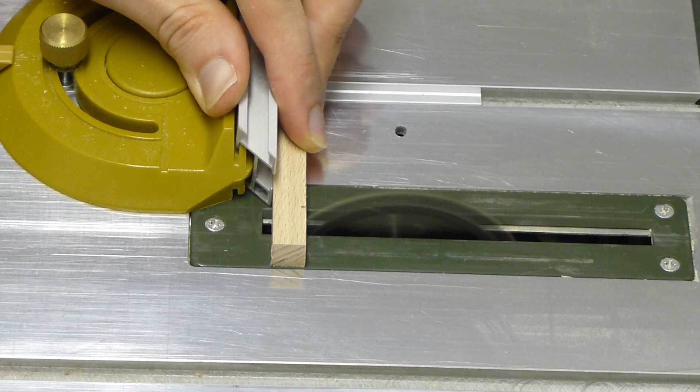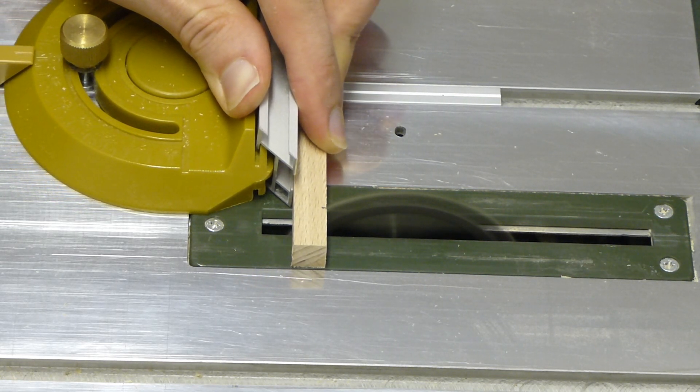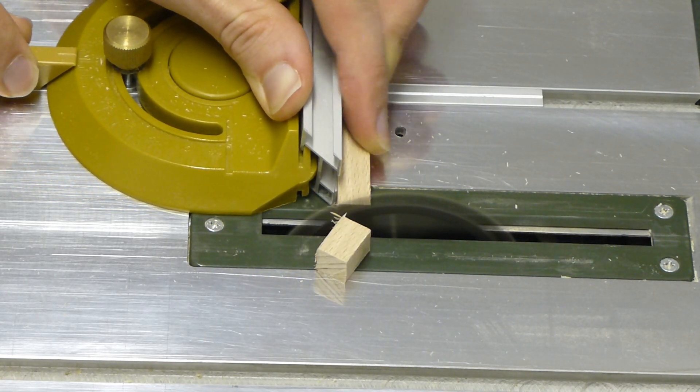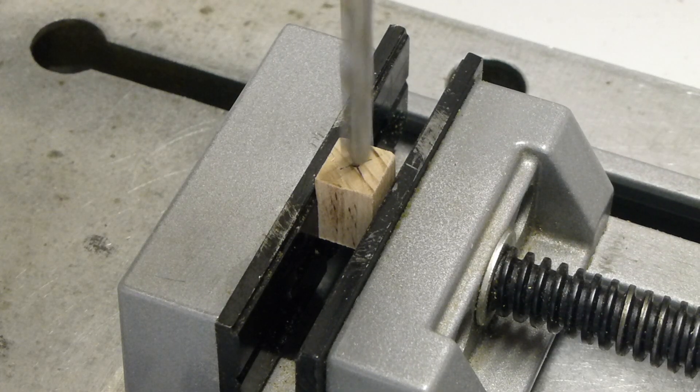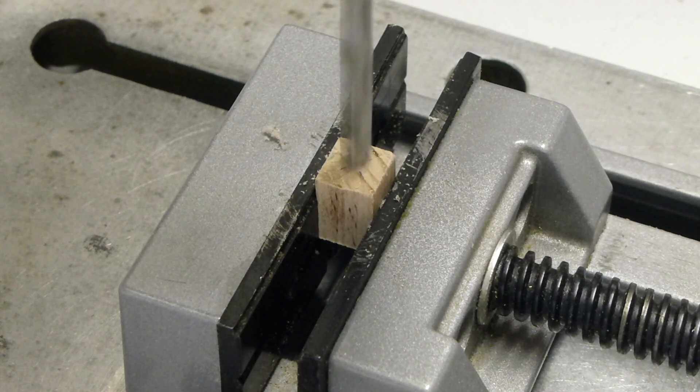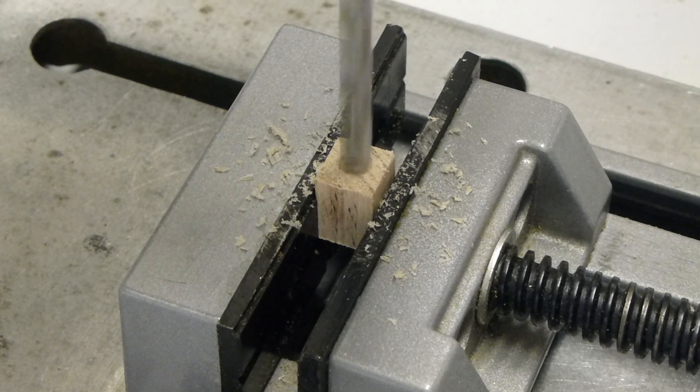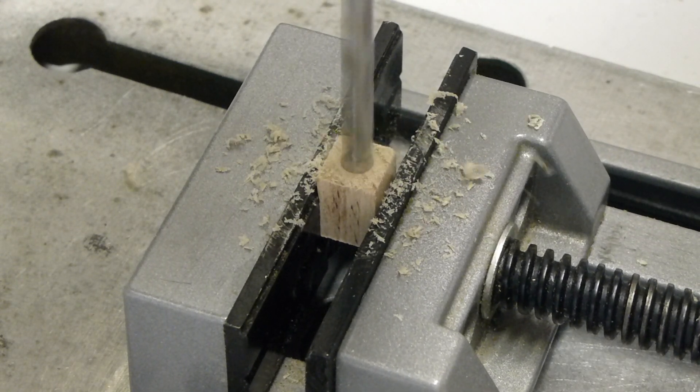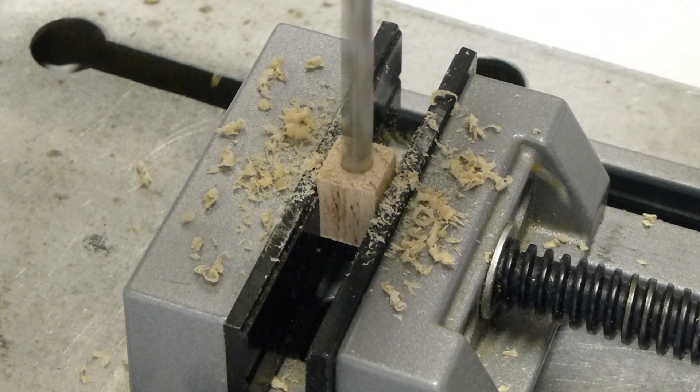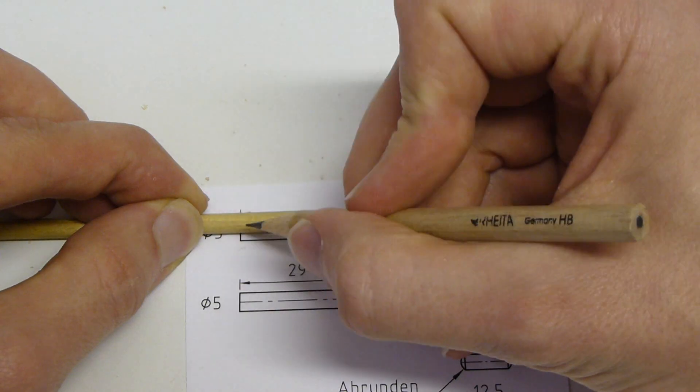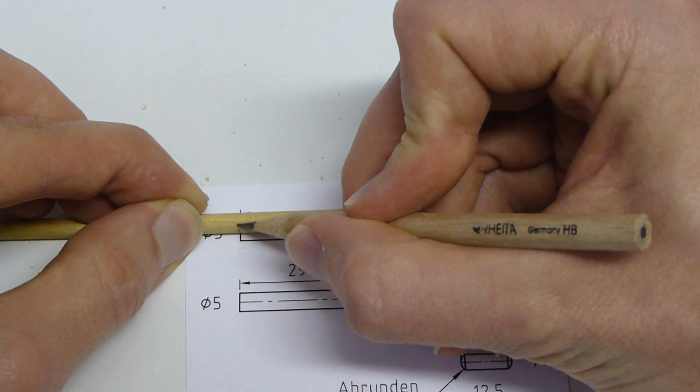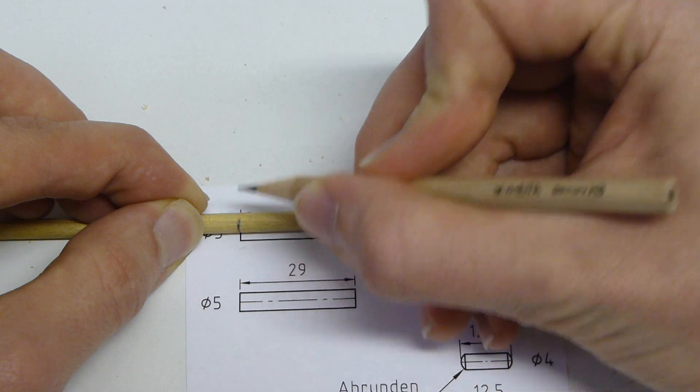Der Tellerfuß wird von einem Bohrestab abgesägt. Zum Anzeichnen der Mitte einfach die Ecken diagonal mit einer Linie verbinden. Die Länge der Rundhölzer kann man ohne zu messen direkt auf der Zeichnung markieren.